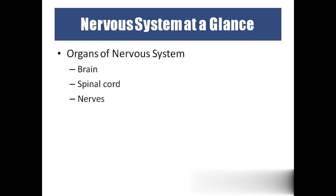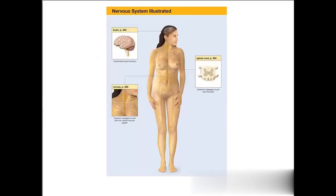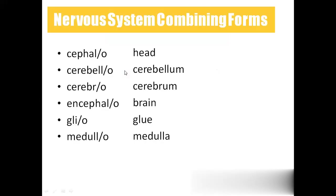Coming to the organs of the nervous system: brain, spinal cord, and nerves. These we call the organs of the nervous system. Brain and spinal cord form the central nervous system. Nerves form the peripheral nervous system. Other than the brain and spinal cord, everything we call the peripheral nervous system. In the picture, you can see we have the brain and spinal cord, and the remaining all will come under the peripheral nervous system.